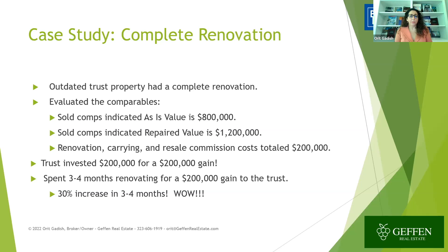Another case study: an outdated trust property that had a complete renovation. I evaluated comparables to determine whether it made sense to do a complete renovation rather than a partial. Sold comps indicated the as-is value was $800,000 and the repaired value was $1.2 million. Renovation, carrying costs, and real estate commission totaled $200,000. The trust invested $200,000 for a $200,000 gain. We spent three to four months renovating for a $200,000 gain to the trust — a 30% increase in three to four months.